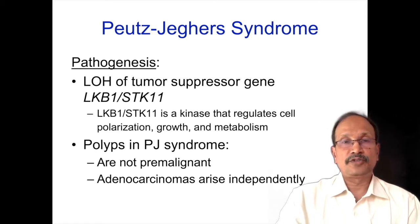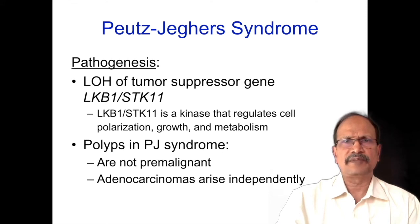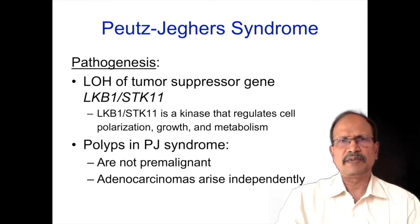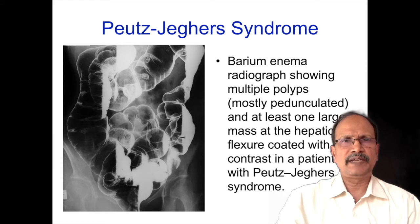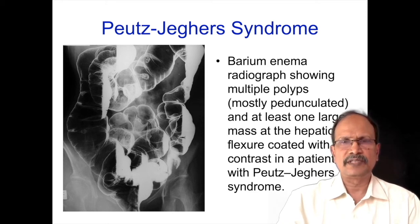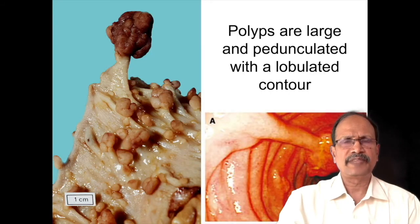A very important point is that in Peutz-Jeghers syndrome, polyps are not pre-malignant. Adenocarcinomas can arise independently of the polyps — the polyps are not the culprits. Adenocarcinoma can occur anywhere in the GIT. The barium series X-ray shows multiple polyps in the colon; you can appreciate on the upper half of the image protruding structures in the transverse colon coated with barium — these are hamartomatous polyps occurring in Peutz-Jeghers syndrome. Grossly, pedunculated polyps with a lobular surface are multiple.